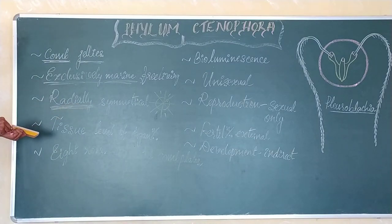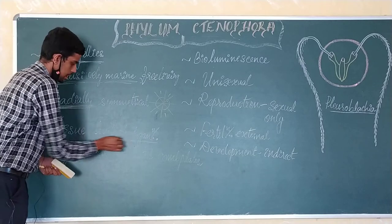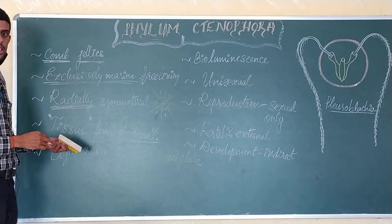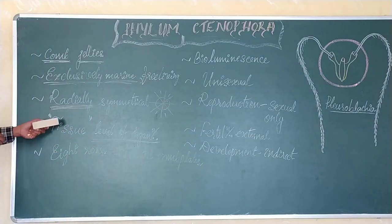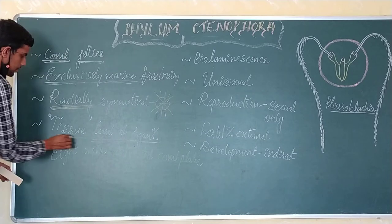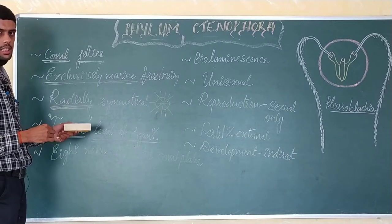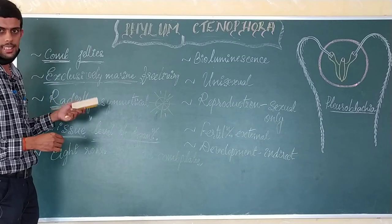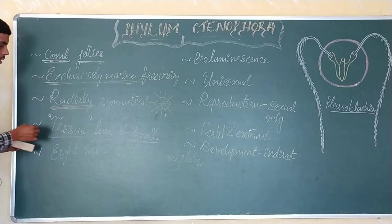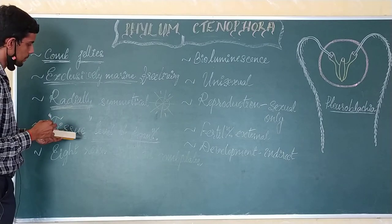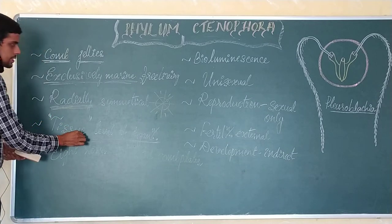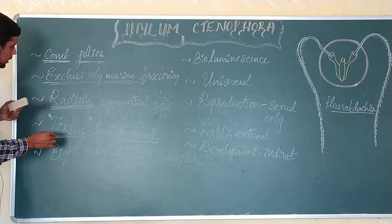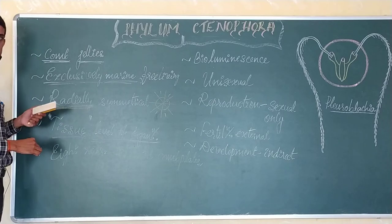The level of organization here is the tissue level. Each of the functions — digestion, respiration, reproduction, and so on — are carried out by different types of tissues. This is a slightly more advanced organization than that of phylum Porifera. Even in Coelentrata, we find the tissue level of organization.